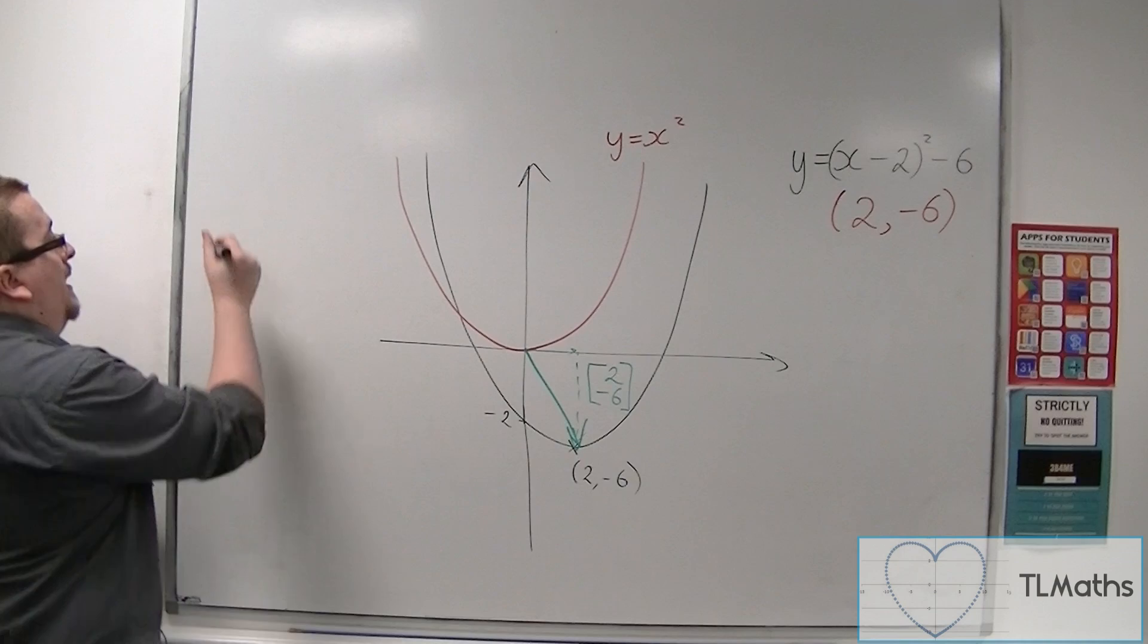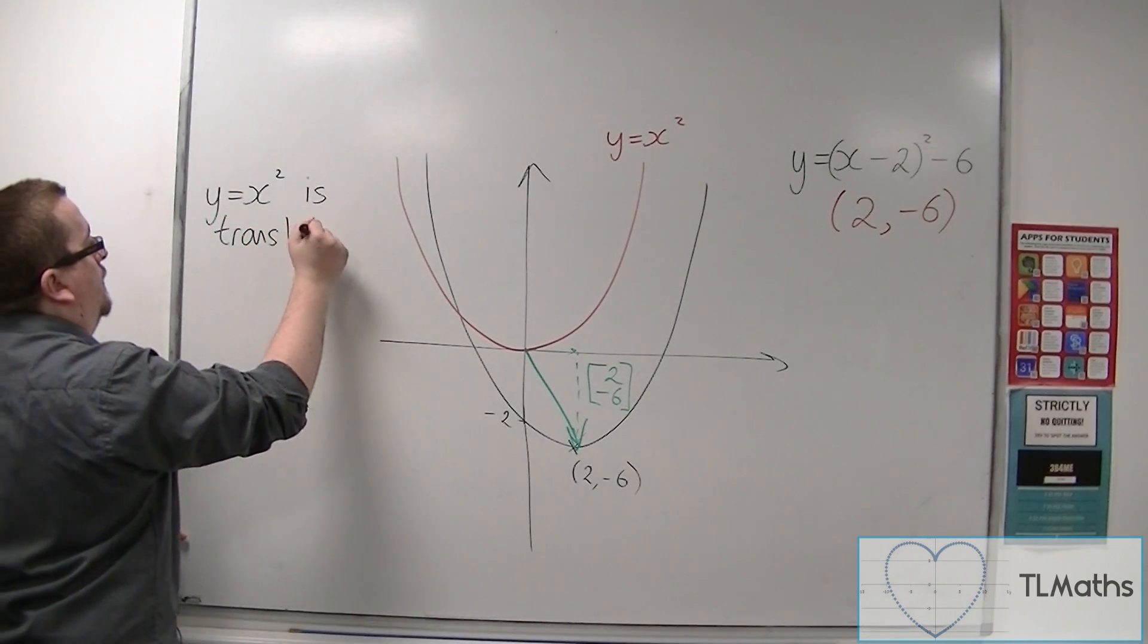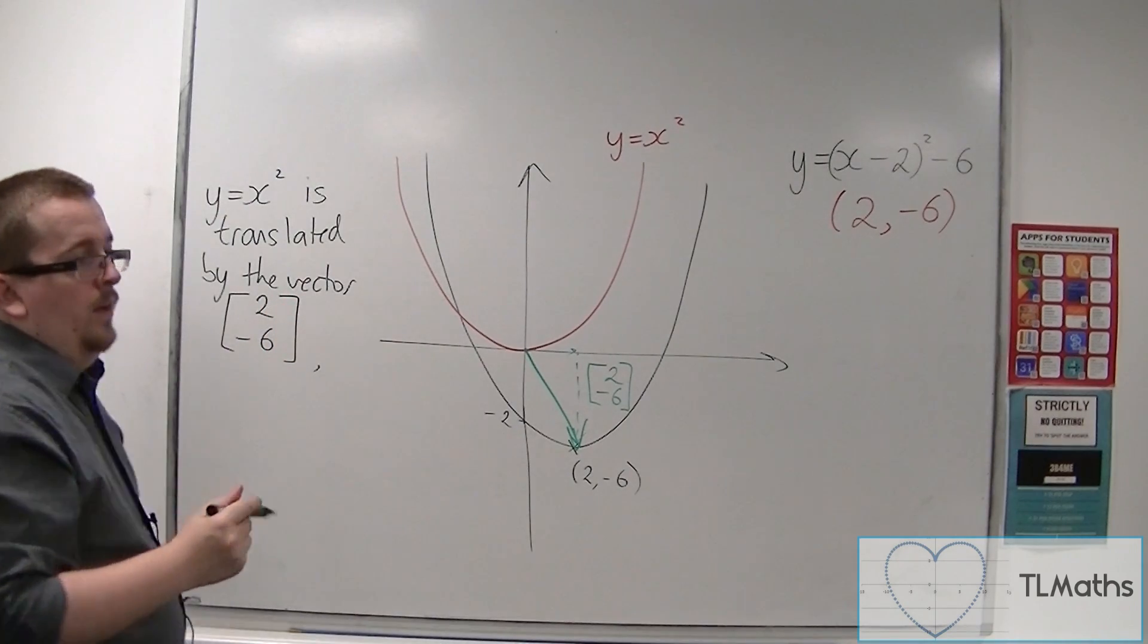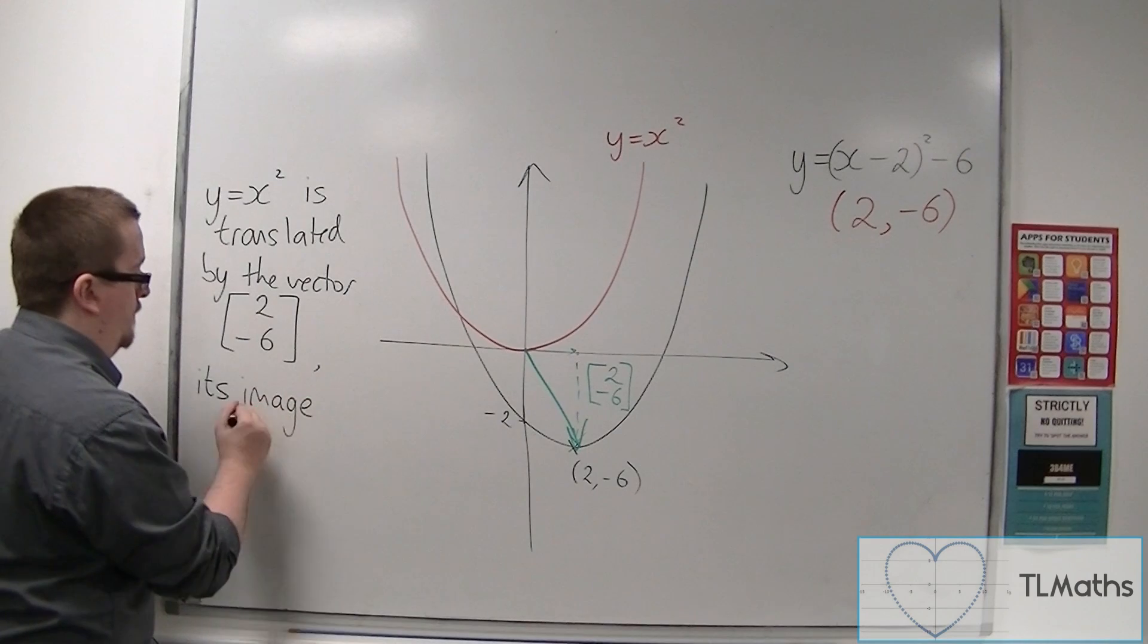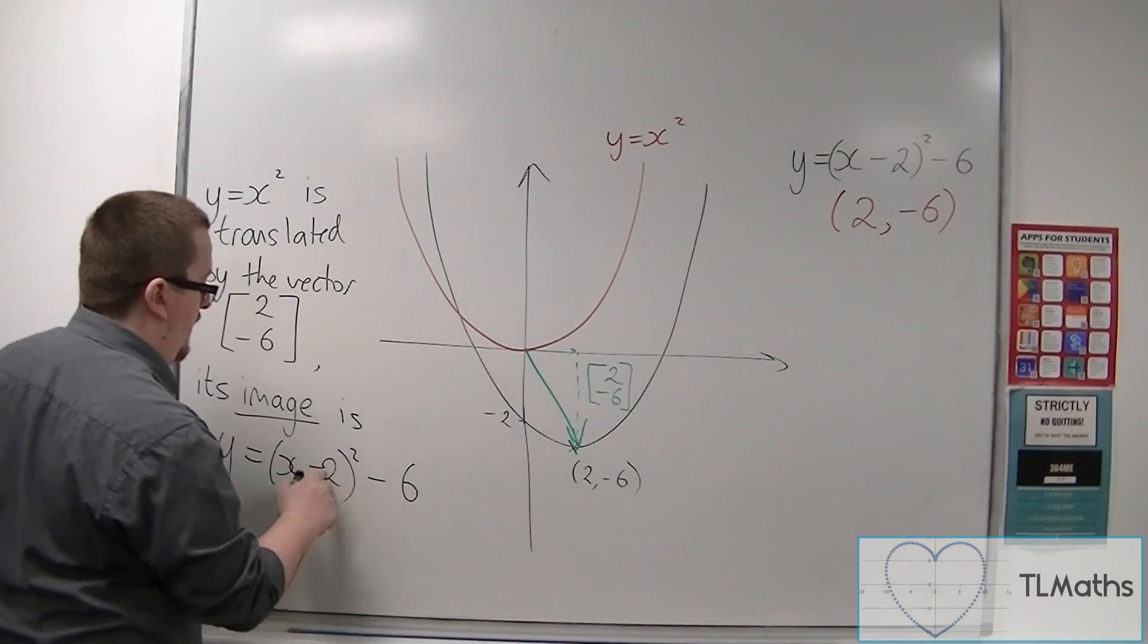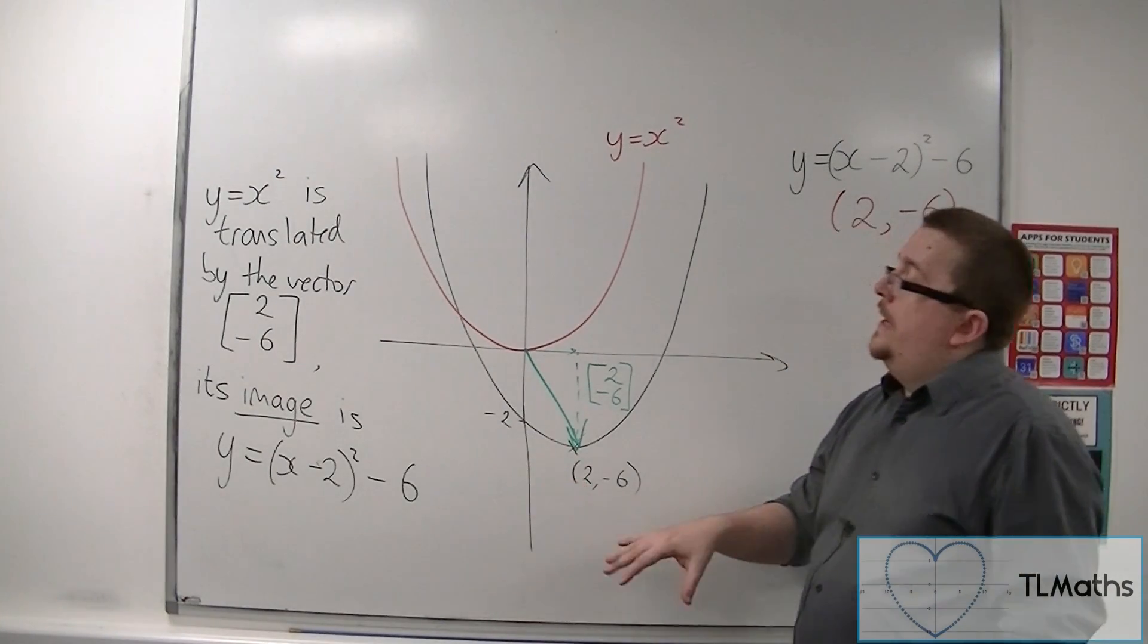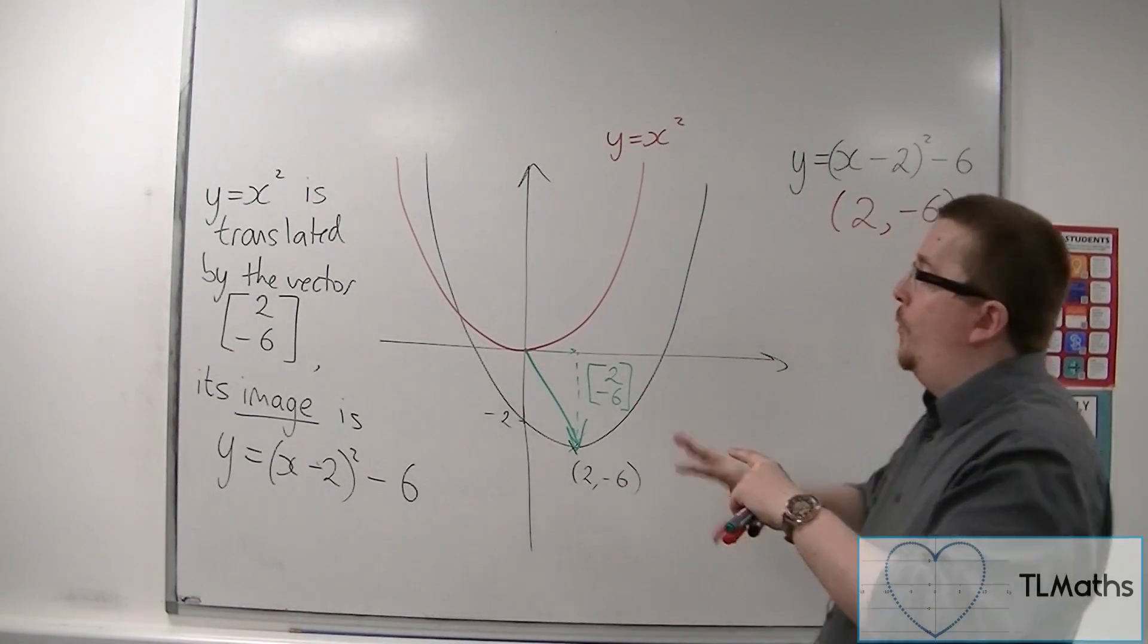So formally we would say that y equals x squared is translated by the vector 2 minus 6. And when it has done that its image, as we refer to it, is y equals x minus 2 squared take away 6. This equation of the black curve. So when we translate a curve we say that its image is the one that it has been put onto, where it has moved to.